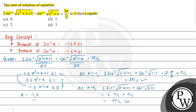So the solutions are x = 0 and x = minus 1. The sum of solutions is 0 + (minus 1) = minus 1. Since the sum equals minus lambda, we have minus lambda = minus 1, which means lambda = 1. Looking at the options, option B is the correct choice.